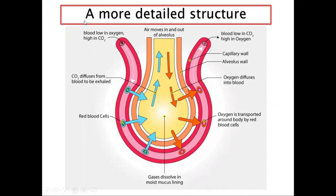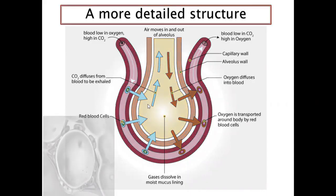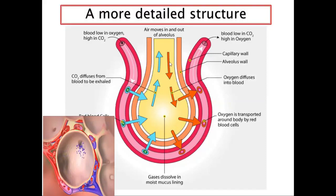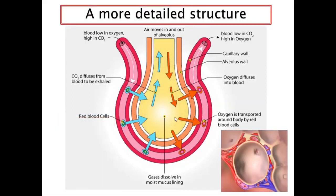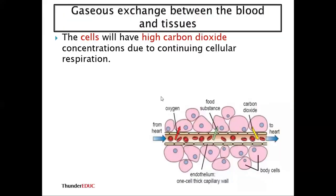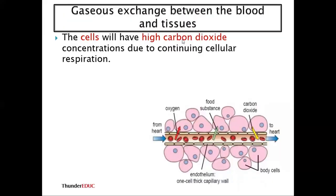In a more detailed structure of the alveolus: blood with high carbon dioxide concentration and low oxygen concentration comes in. Carbon dioxide diffuses into the space of the alveolus, and the red blood cells release carbon dioxide into this space. Oxygen, present at high concentration in the incoming air, diffuses into the red blood cells.